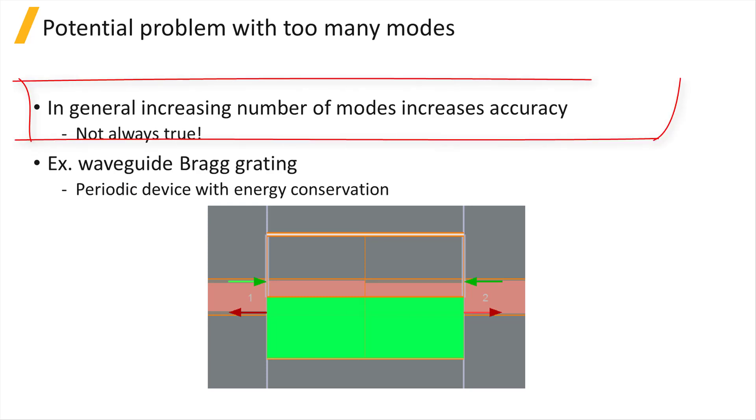In general, increasing the number of modes should make the results more accurate, and this makes sense intuitively. However, there are rare cases where this is not true in practice. Consider this periodic waveguide Bragg grating.